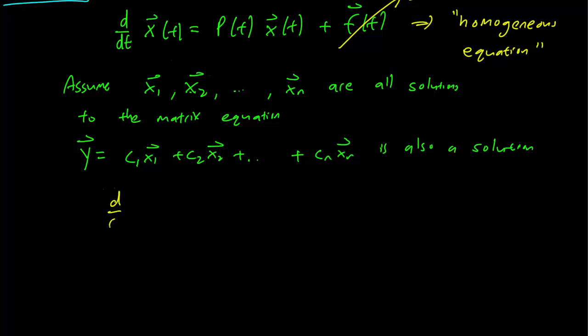If we look at d/dt y(t), this is going to be equal to c1 derivative of x1 because of how our vectors distribute.